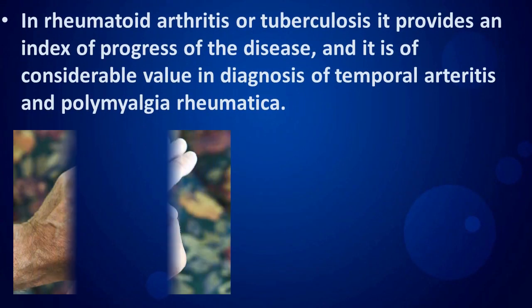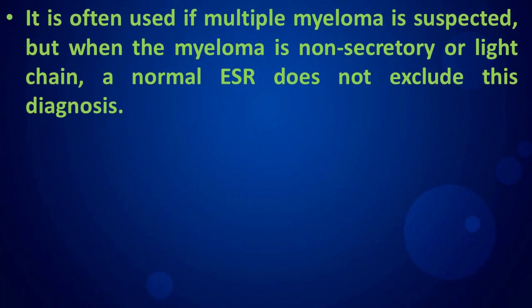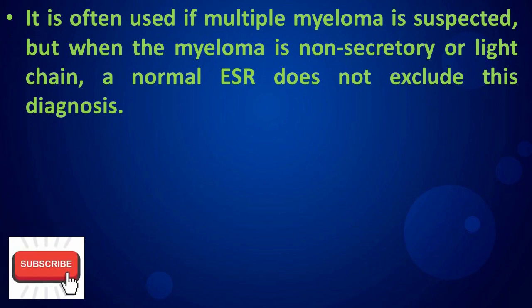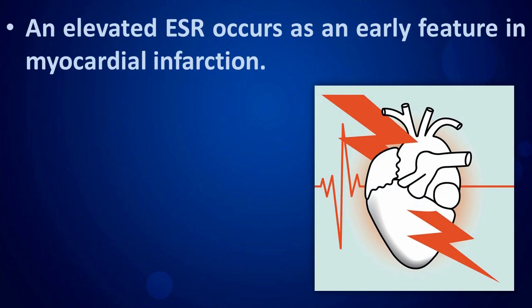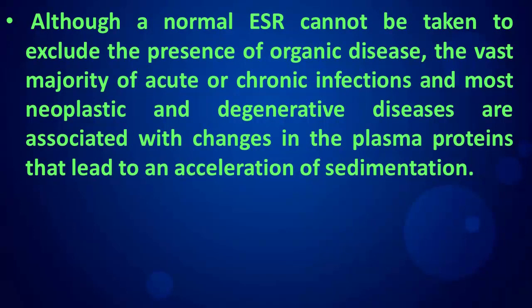In rheumatoid arthritis or tuberculosis, it provides an index of progress of the disease. It is of considerable value in diagnosis of temporal arteritis and polymyalgia rheumatica. It is often used if multiple myeloma is suspected, but when the myeloma is non-secretory or light chain, a normal ESR does not exclude this diagnosis. An elevated ESR occurs as an early feature in myocardial infarction.